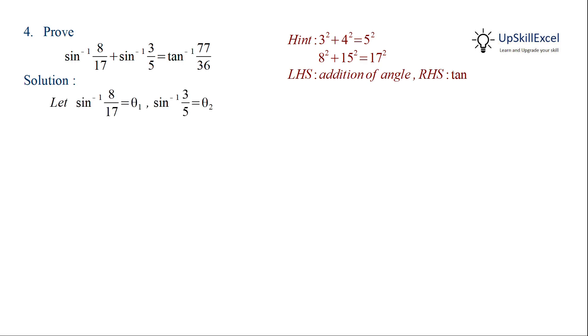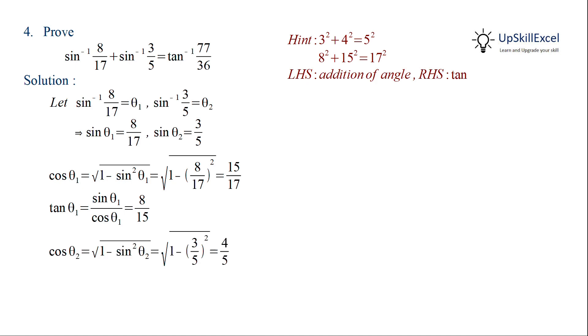So let's start with assuming sin inverse 8 by 17 is equal to theta 1 and sin inverse 3 by 5 is equal to theta 2. Then we can find out the other angles, that is cos theta 1, tan theta 1, and cos theta 2, tan theta 2.